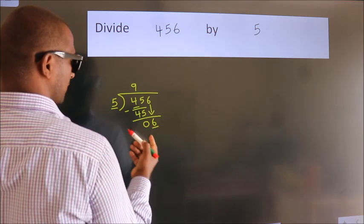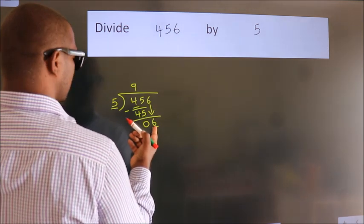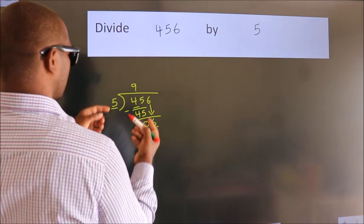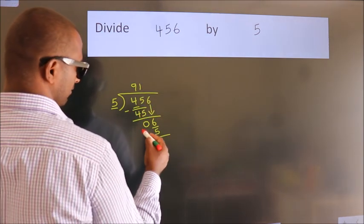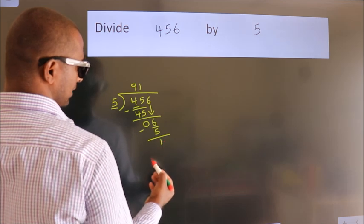So, 6. A number close to 6 in the 5 table is 5 ones, 5. Now, we subtract. We get 1.